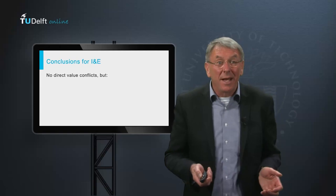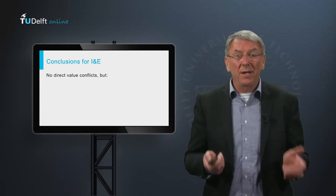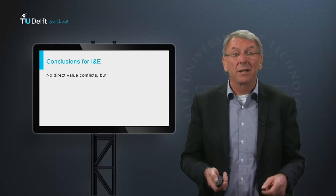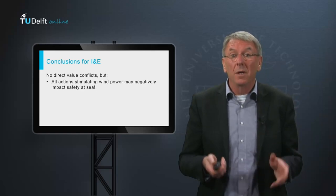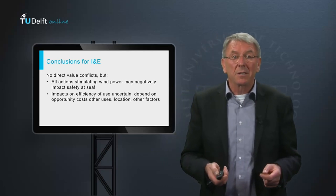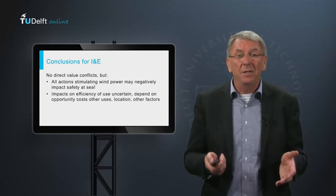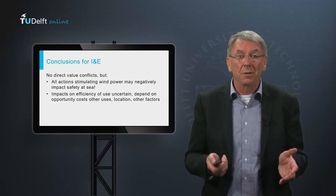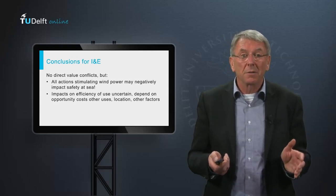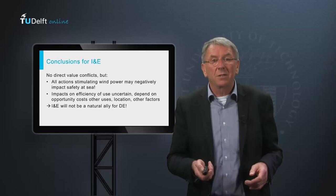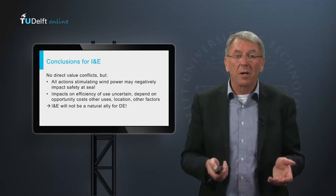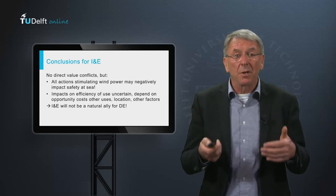What can we now learn from this analysis? First, there are no direct value conflicts. The Ministry of Infrastructure and Environment is interested in other things than the Department of Energy. However, using space for wind farms may negatively affect safety at sea, and the impacts of adding wind farms on efficiency of space use are uncertain and depend on opportunities for other uses, location, and perhaps other factors. Therefore, while the interests of the Ministry are not directly conflicting with those of the Department of Energy, it will not be a natural ally either.